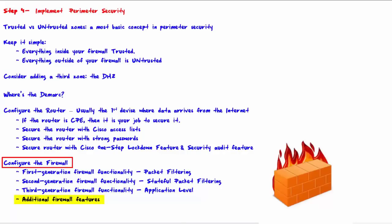Many firewalls also include additional security features beyond the three generations, such as VPN capabilities, content filtering to block end users from accessing certain websites, gateway antivirus, intrusion prevention, anti-spyware, and logging and alerts. These features make many modern firewalls true network security appliances, and you definitely want to take advantage of them. That is the end of this video.